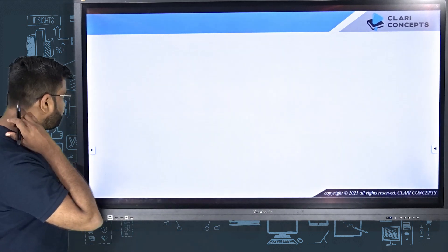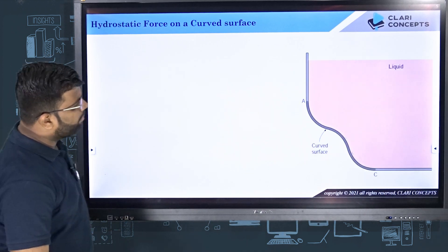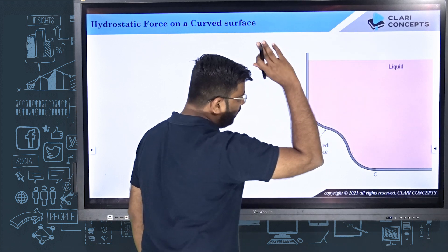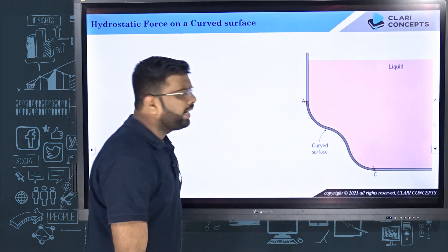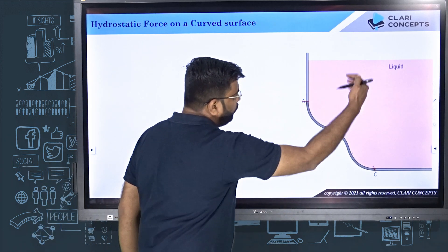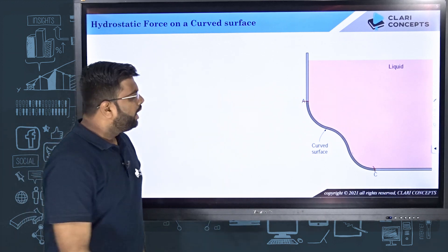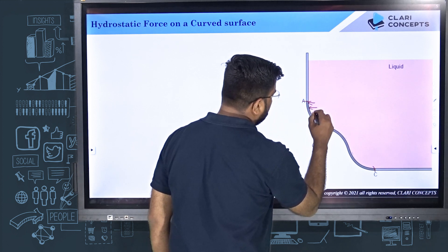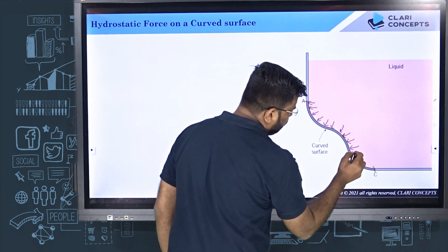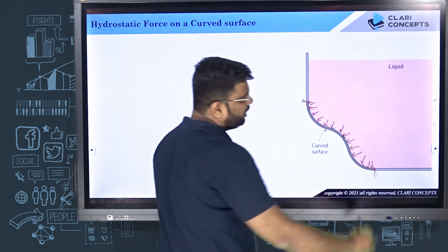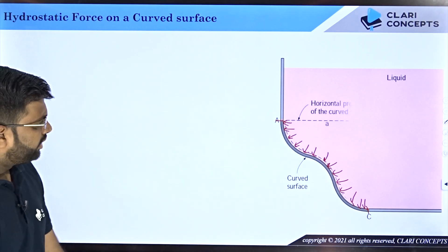Let us say I have a container where liquid or fluid is filled, and I want to know that from point A to point C — this curved surface — what is the exact amount of force the fluid is applying on this surface. You cannot simply say Fr equals Pc times A, because at each point on this surface the hydrostatic force always acts normal to it, so the directions of all the small forces are different. How do you figure out the total force acting on this curved surface?